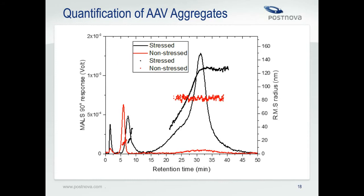The MALS detector response shows that the monomers have a measured size consistent with most AAVs, around 30 to 60 nanometers in diameter. The aggregates in the non-stressed AAV sample are monodisperse, with an Rg around 80 nanometers, or 160 nanometers in diameter. For the stressed AAV, there's substantial polydispersity in aggregate size, ranging from about 80 to 240 nanometers in diameter. AF4-MALS is able to separate and size large AAV aggregates and discern differences in aggregate concentration. Most size exclusion chromatography columns would filter out some or all aggregates this large, resulting in incorrect determination of aggregate content or even the false conclusion that no aggregates are present.